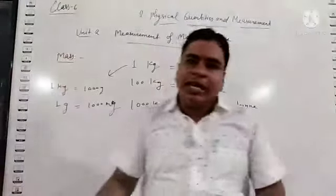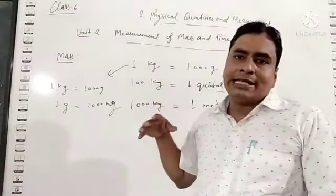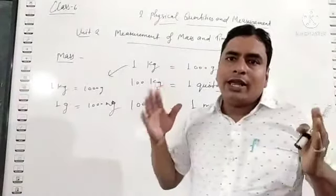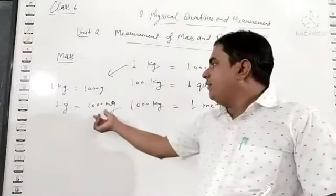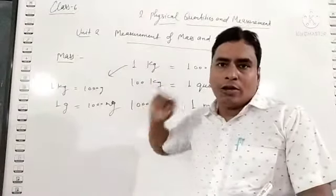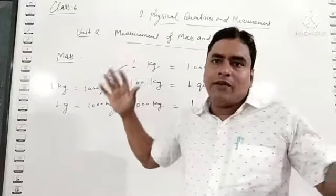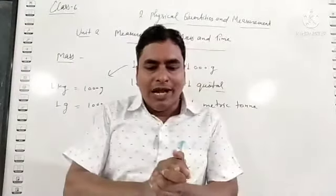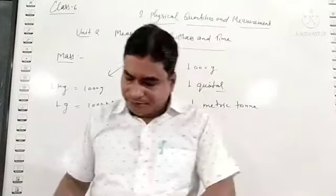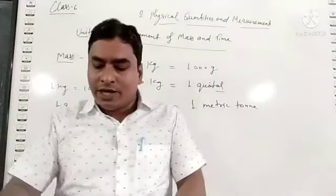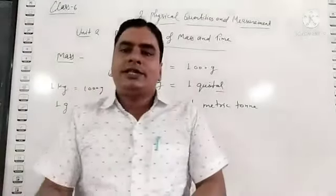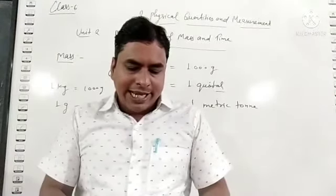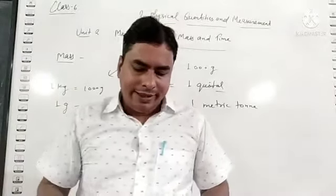According to our requirement or need, we will use these types of multiples and submultiples. If an object is very light or small, we can measure the mass in grams or milligrams. For standard measurement we use kilograms, and for really heavy objects we use quintal or metric ton. For measuring mass of heavier bodies, quintal is used.